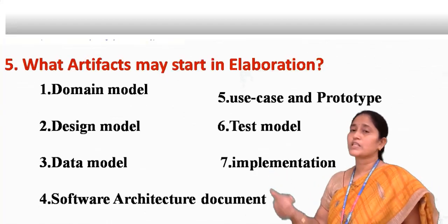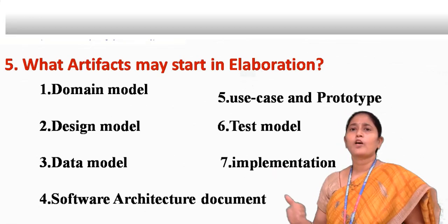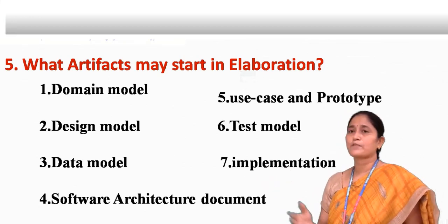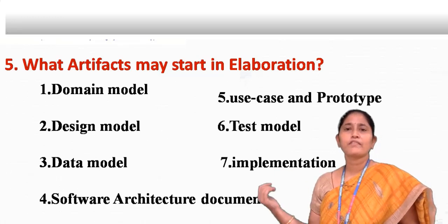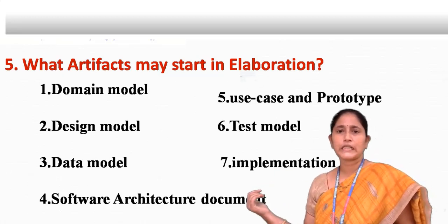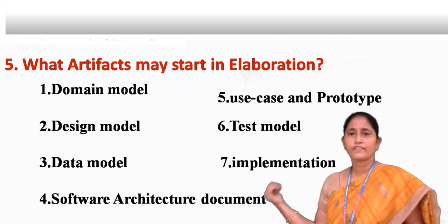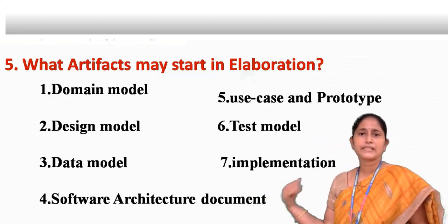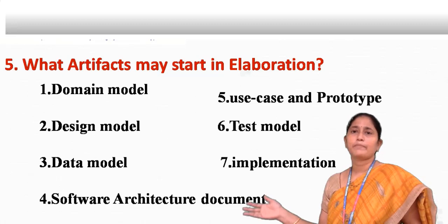The artifacts used in elaboration include different types. First is a domain model. Second is a design model. Third is a data model. Fourth is a software or textual document. Fifth is use cases and prototype. Sixth is a test model. And seventh is an implementation.